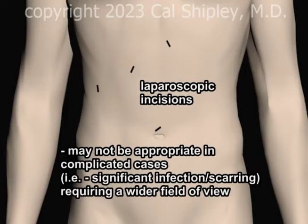The primary disadvantage of the laparoscopic approach for gallbladder removal is in cases where the normal anatomy has been obscured or distorted by significant infection or scarring, necessitating a wider field of view for the operating surgeon.